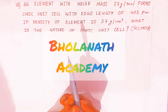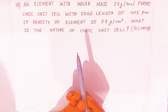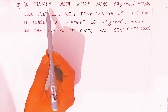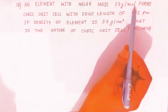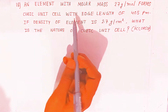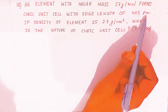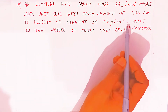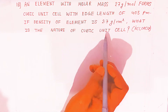Hello students, once again welcome to Bholanath Academy. We are going to see question number 18. An element with molar mass 27 gram per mole forms a cubic unit cell with edge length 405 picometer. If the density of the element is 2.7 gram per centimeter cube, what is the nature of the cubic unit cell?